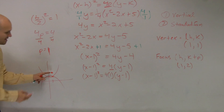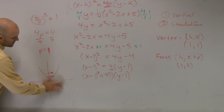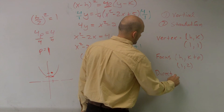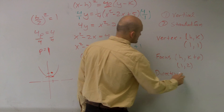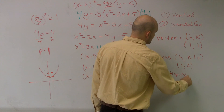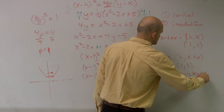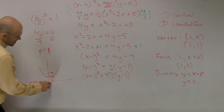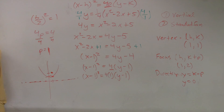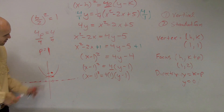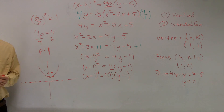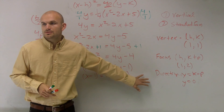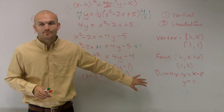Since p is positive, my focus tells me the graph opens up. My directrix is y equals k minus p, so y equals 1 minus 1, which is y equals 0. So my directrix is the x-axis in this case. The vertex is at 1 comma 1, the focus is at 1 comma 2, and the directrix is y equals 0.